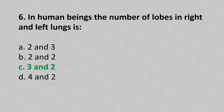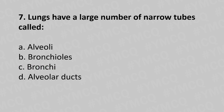Now let's move to question number seven. Lungs have a large number of narrow tubes called: option a, alveoli; option b, bronchioles; option c, bronchi; option d, alveolar ducts. And the answer is option b, bronchioles.